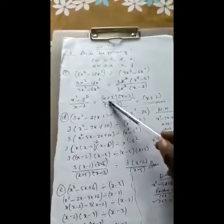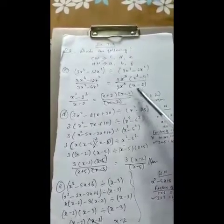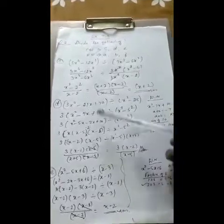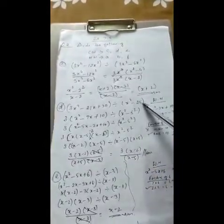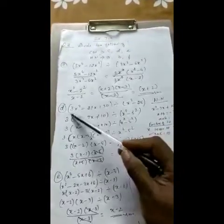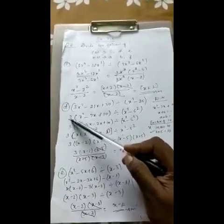This is the D sum: 3x² - 21x + 30 divided by x² - 25. So here just see the HCF of three numbers: 3, -21, and 30. Three will be the HCF, so I took the HCF outside, remaining number I put inside.